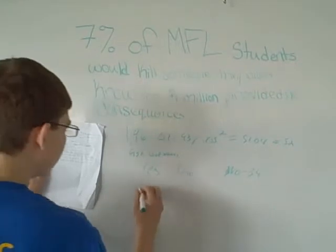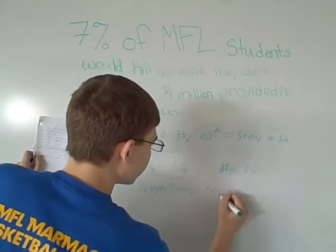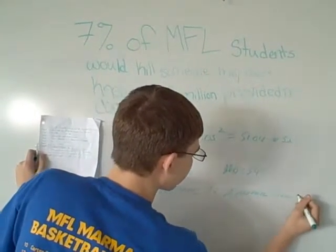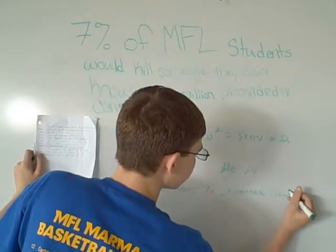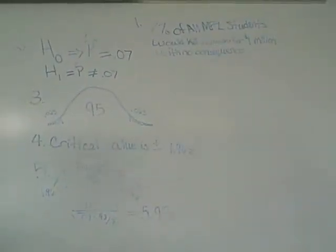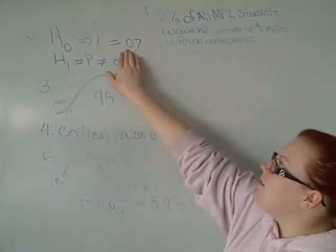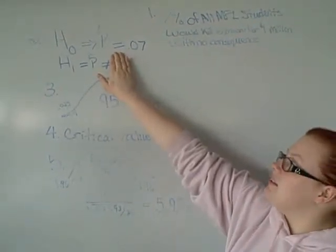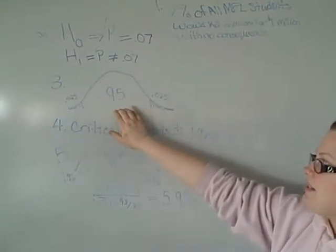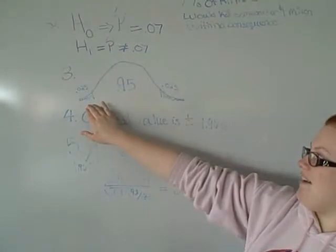Our claim is the proportion equals 7%, and the alternate claim is the proportion does not equal 7%. Our hypothesis again was 7% of all MFMARMAC students would kill someone for a million dollars with no consequences. H sub 0 is p-hat equal to .07. H sub 1 is p-hat is not equal to .07. This is our 95% acceptance area, with a two-tailed test of .025 on each side.